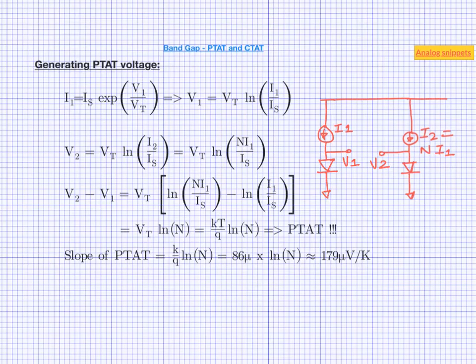Another point worth mentioning is that making the current ratioed is not the only way to generate the PTAT voltage. You can also generate a PTAT voltage by making one diode N times bigger while keeping the current same. In that case V2 will be the smaller of the two voltages. Or you can use the combination of the two, ratioed current as well as ratioed devices.